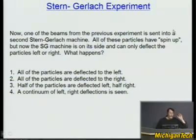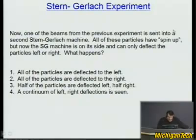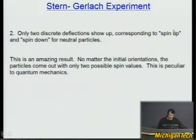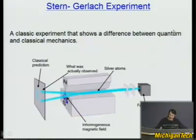We wouldn't be satisfied with that in this class — we have to make it more complicated. So now one of the beams from the previous Stern-Gerlach experiment is sent into a second Stern-Gerlach experiment. All of these particles have spin up, but now this second Stern-Gerlach machine is on its side — it can only deflect particles left or right. We're going to isolate the up beam and put it through this second device.